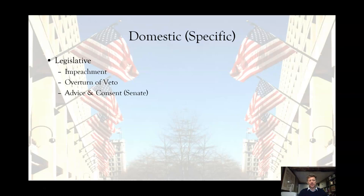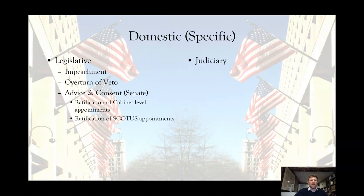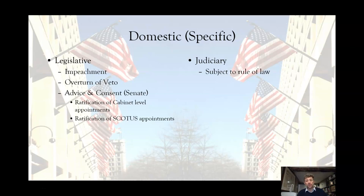Advice and consent: this is the way in which the Senate has to ratify either some appointments or indeed treaties. Domestic checks on the judiciary: the president is subject to the rule of law and has to answer for that — he has to act in a way consistent with the law. We all know about the question of whether the president is immune from arrest while in office. Could he kill somebody on the floor of the Oval Office and not be arrested? The short answer is we don't know. No president, as far as we're aware, has killed anybody in the Oval Office, and Trump seems determined to push this particular thing to its limits.